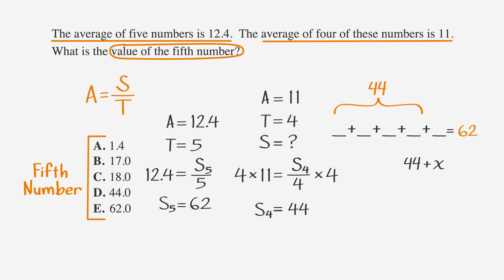Let's take a second to think about what we know now. In the first part of the problem, we found that the sum of five numbers is 62 and that the sum of four of those numbers is 44. We can say that 44 plus our missing number X equals 62. Subtract 44 from both sides, we get that X equals 18, which is answer choice C.